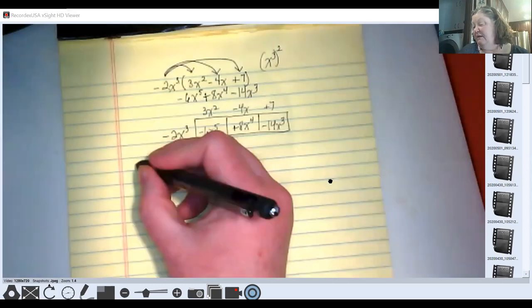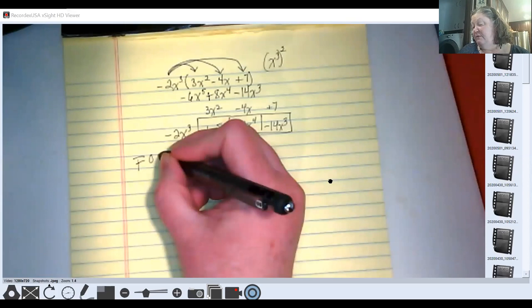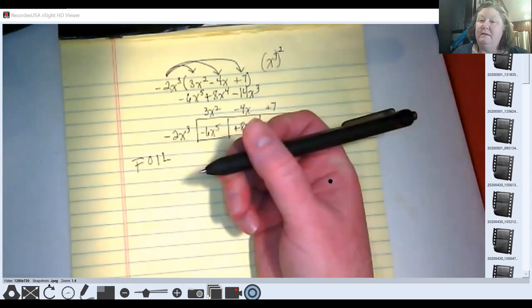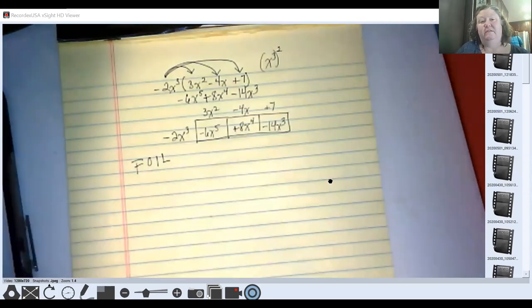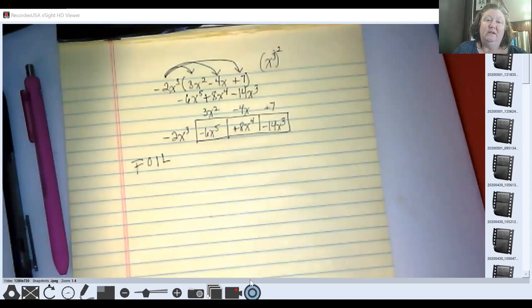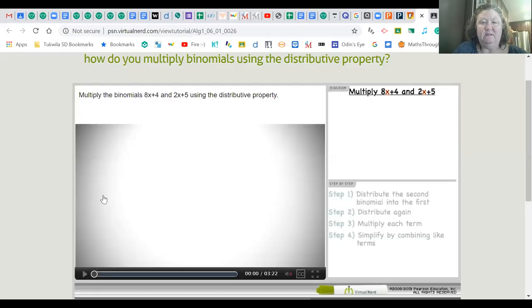But what I want to show you next is what has commonly been referred to as the FOIL method of multiplying polynomials. And then I'm going to show you how to do the same problem using a box method and see which one you prefer. Okay. So I'm going to show you this video which is part of our textbook. I don't think you can hear the sound so I'll just do some narration and possibly pause it.